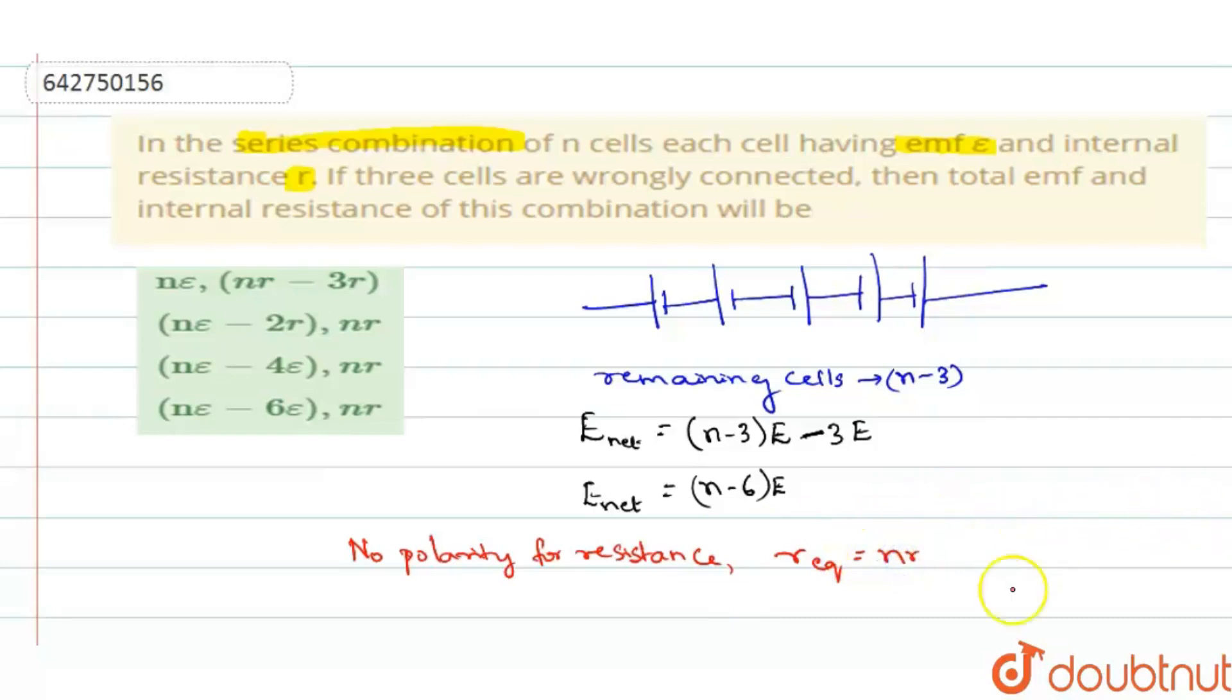So total R equivalent resistance for N cells connected will be NR only. It is R1 plus R2 plus R3 so on up to RN. It will be equal to NR. So equivalent EMF will be equal to N minus six into E, whereas the resistance, internal resistance will be equal to N into R.